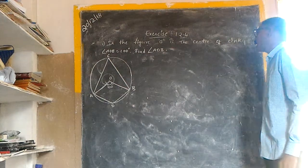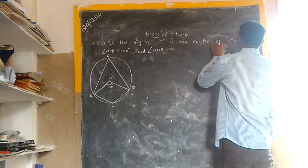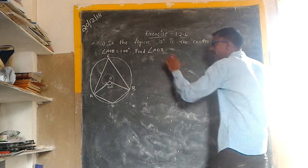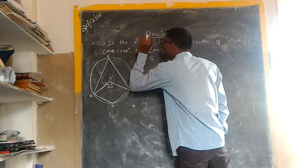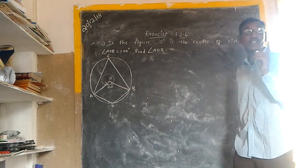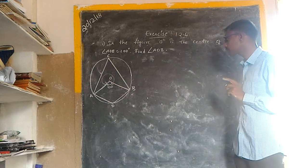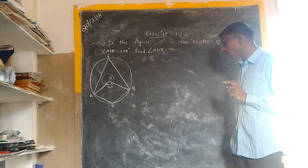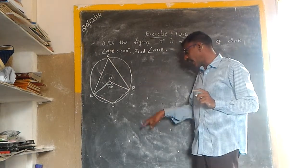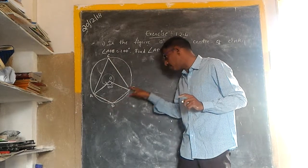In the given figure, O is the center of the circle and angle AOB is equal to 100 degrees. Find angle ADB.